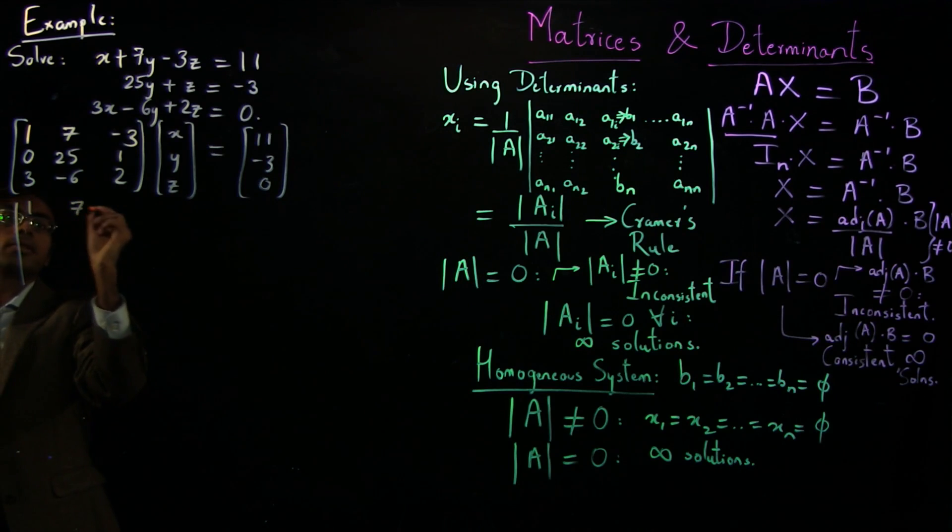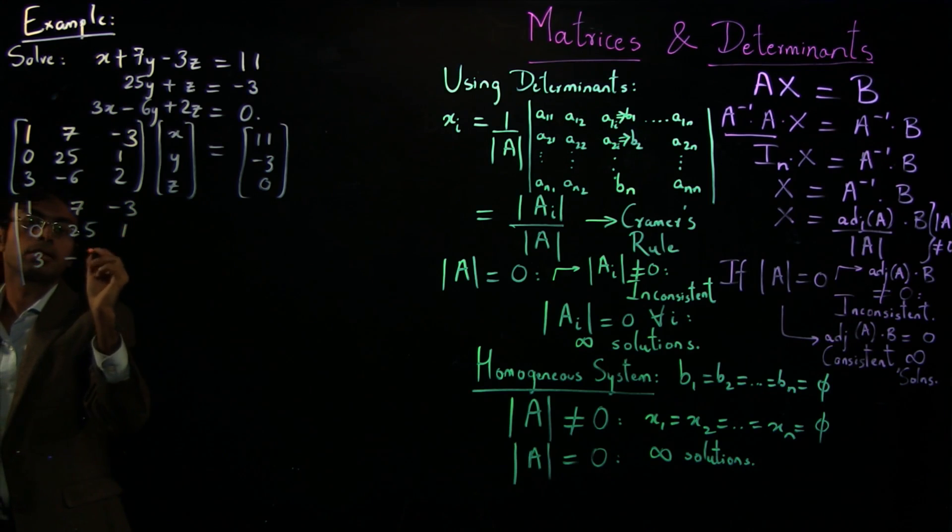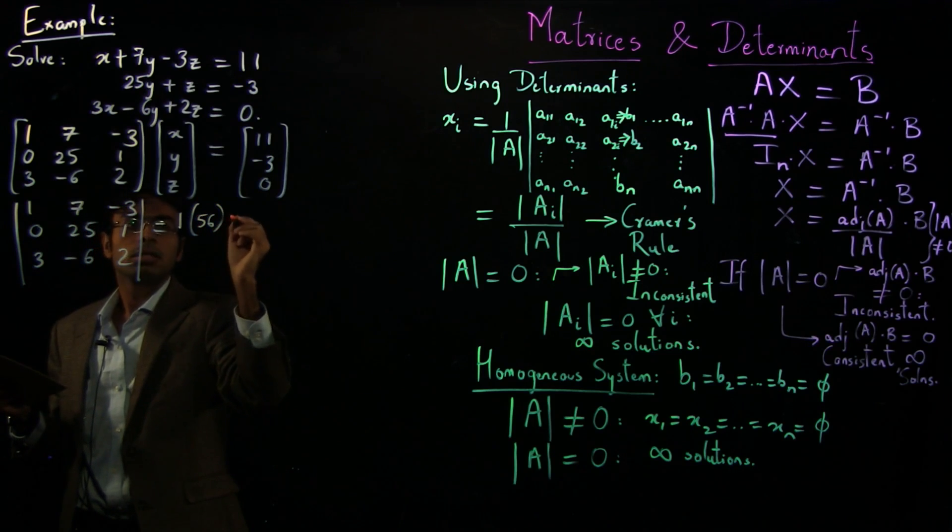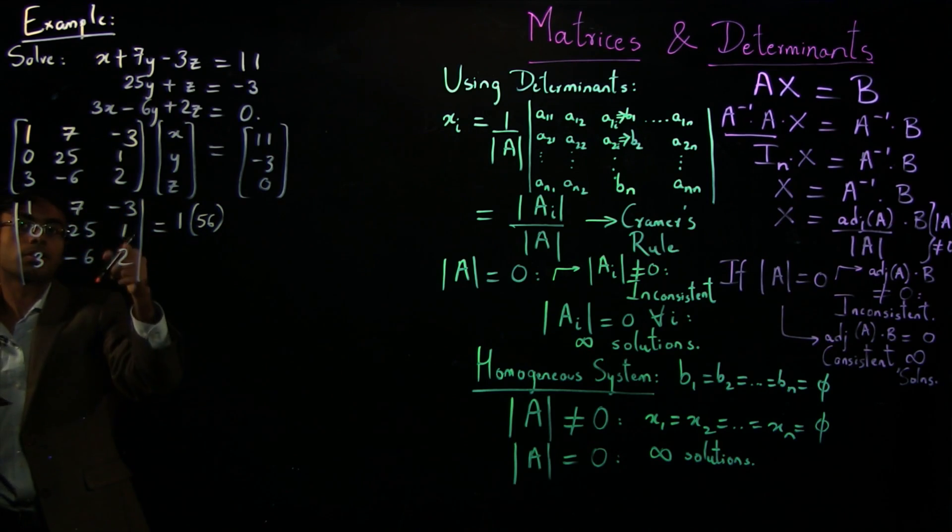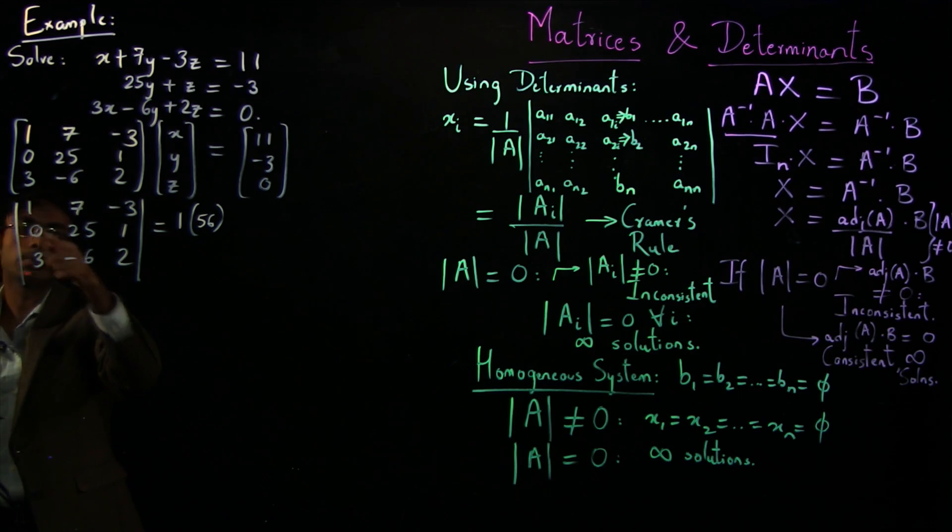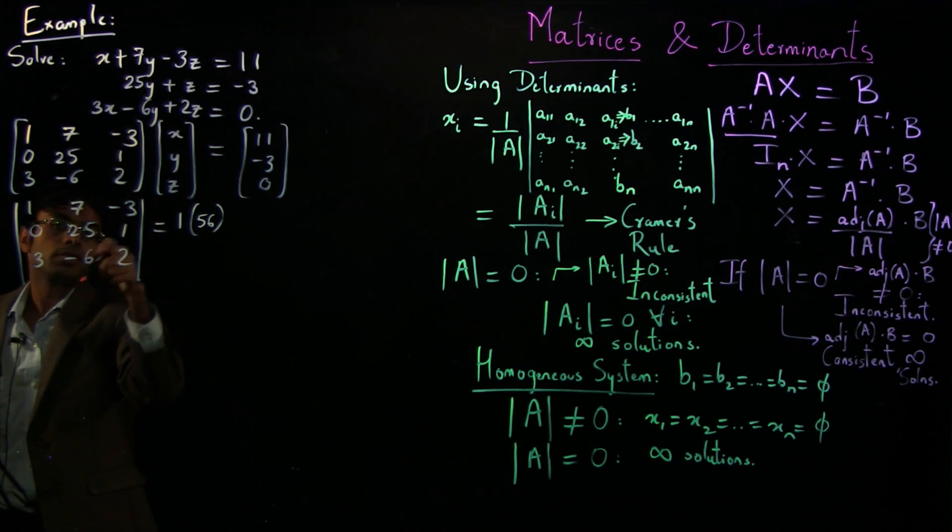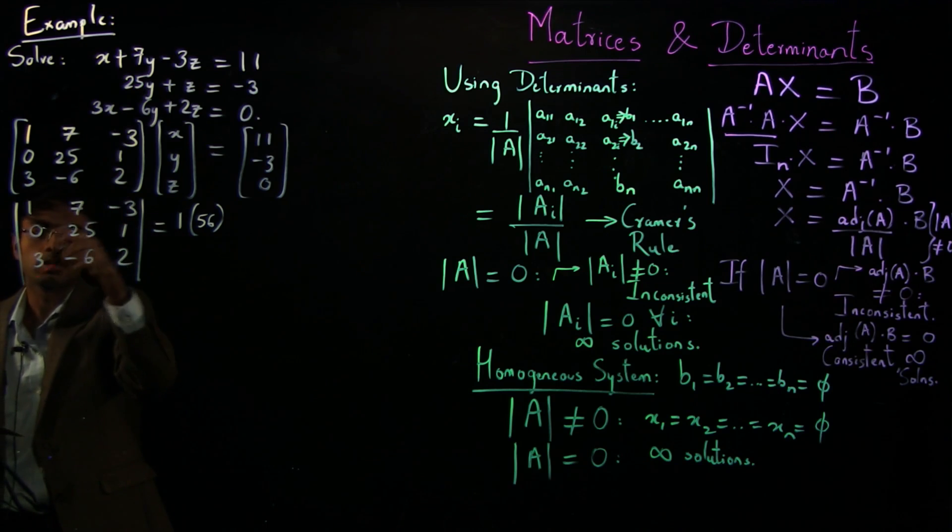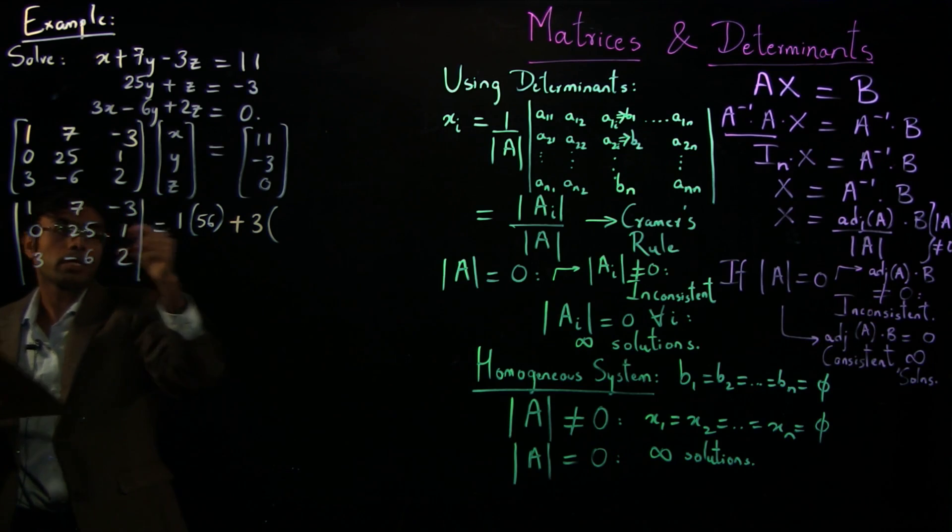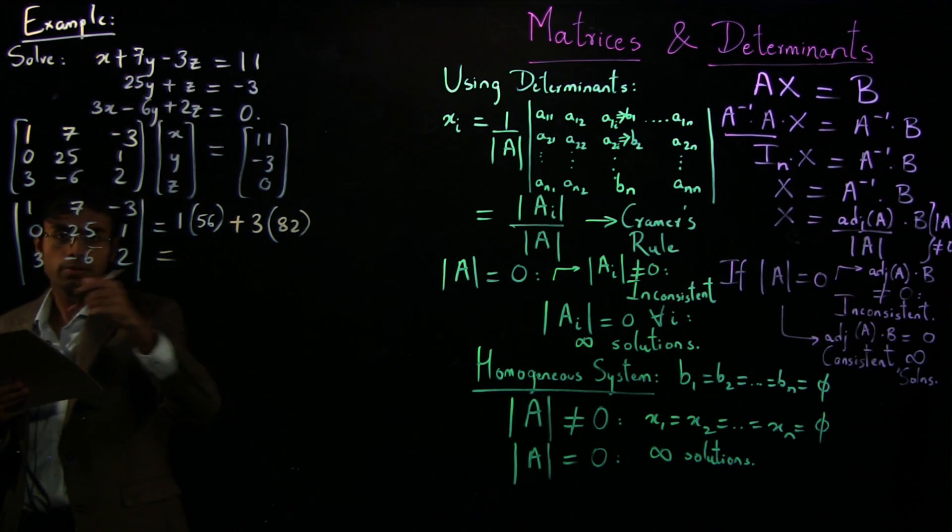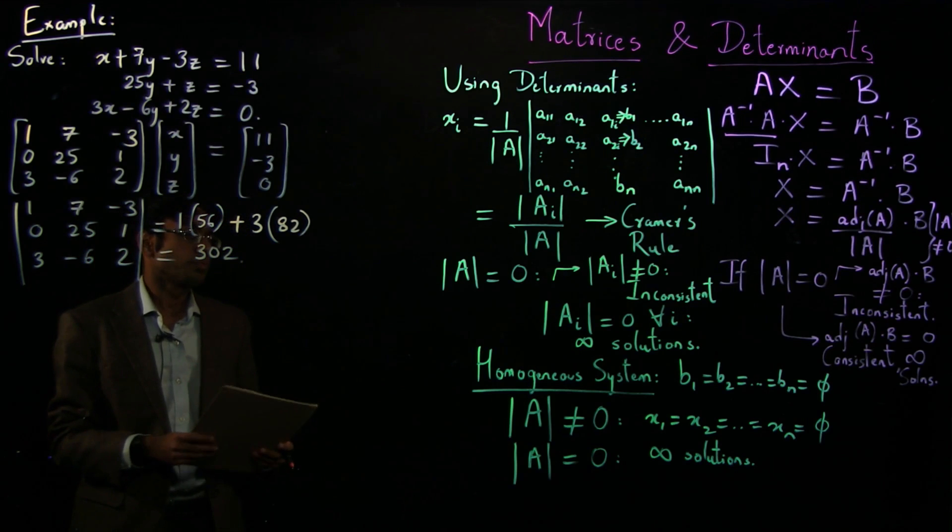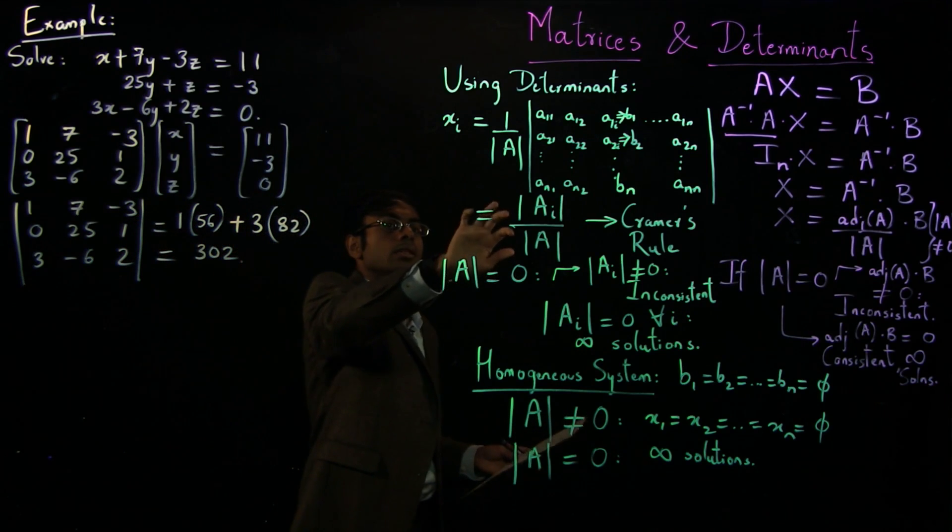So check this calculation. So 1, 7, minus 3, zero, 25, 1, 3, minus 6, 2. So this works out to be 1 times 56. I'm expanding by this column. Note that if any column or row of the determinant has one or more zero elements, it's always easier to expand by that row or column. So that's why I'm choosing to expand by this column instead of by any other row or column. So 1 times 50 plus 6, so 56, minus 0 times something, the cofactor of this element, which we don't care, plus 3 times, so 7 minus minus 75, so 82. So the value of the determinant of A works out to be 302, which is not zero.